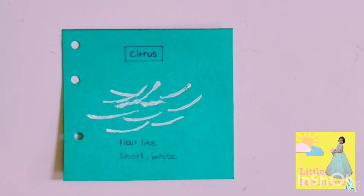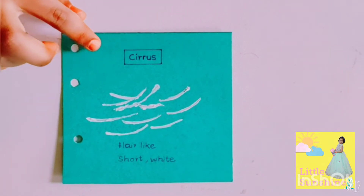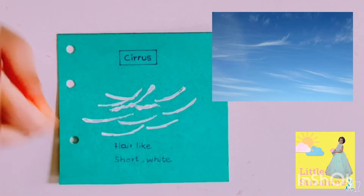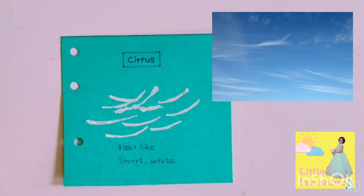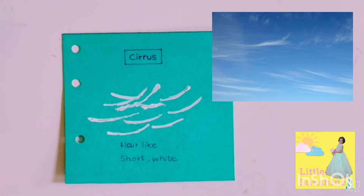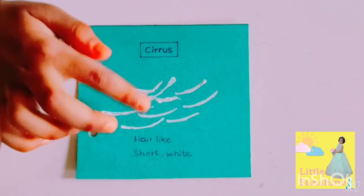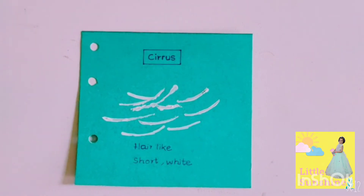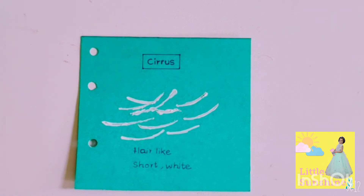These are Cirrus clouds. These are hair-like, short and white. We made this with white paint.